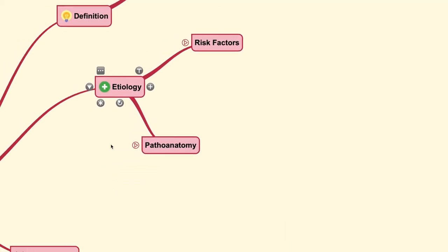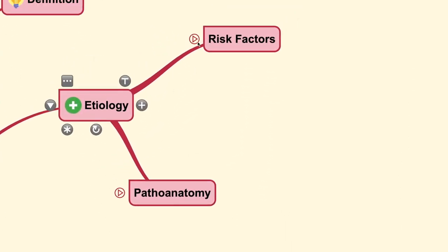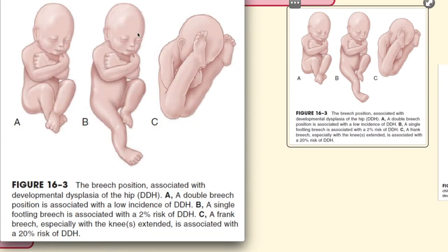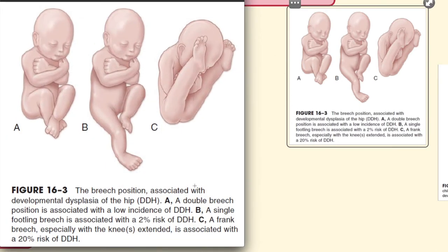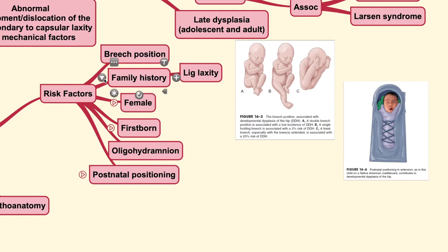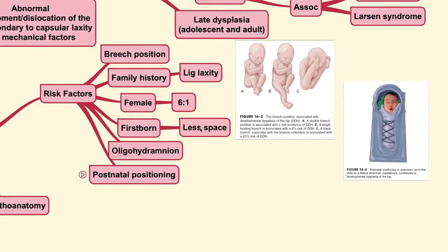For the etiology itself, DDH can have several connected risk factors, and during exams these are frequently asked. For breech positioning, a double breech, single floating breech, or frank breech position is associated with DDH — the risk of developing DDH with frank breech is up to 20%. There can also be a positive family history of ligamentous laxity especially, and DDH is frequently found in the female population at a ratio of up to 6:1. Firstborn babies are also associated with DDH.